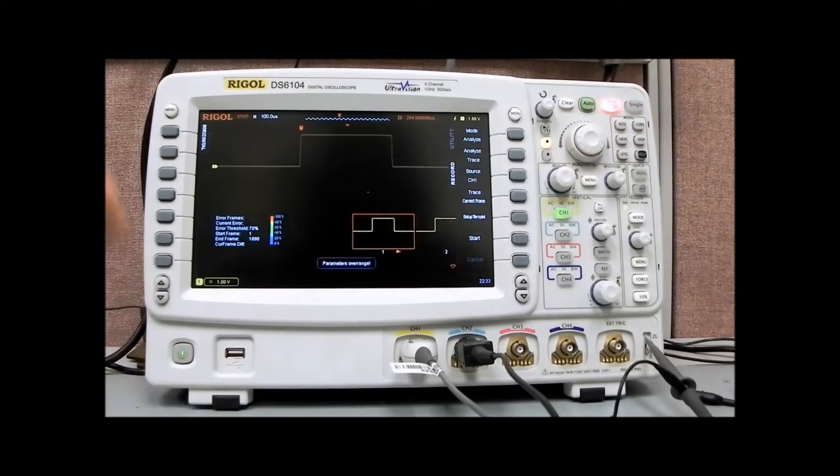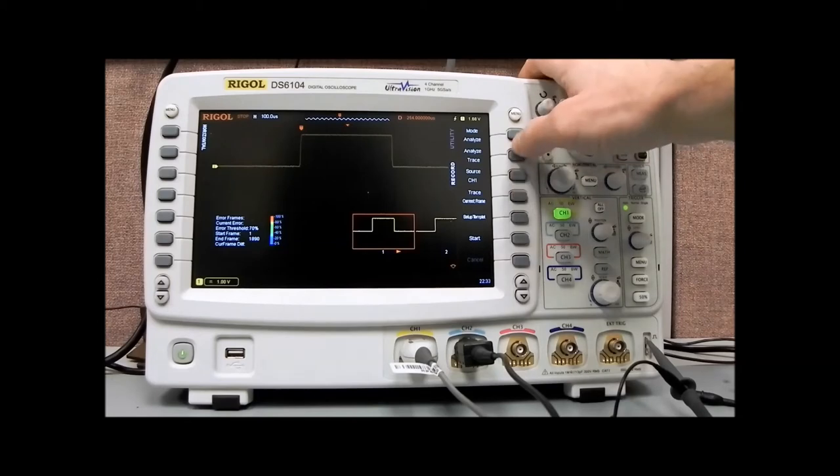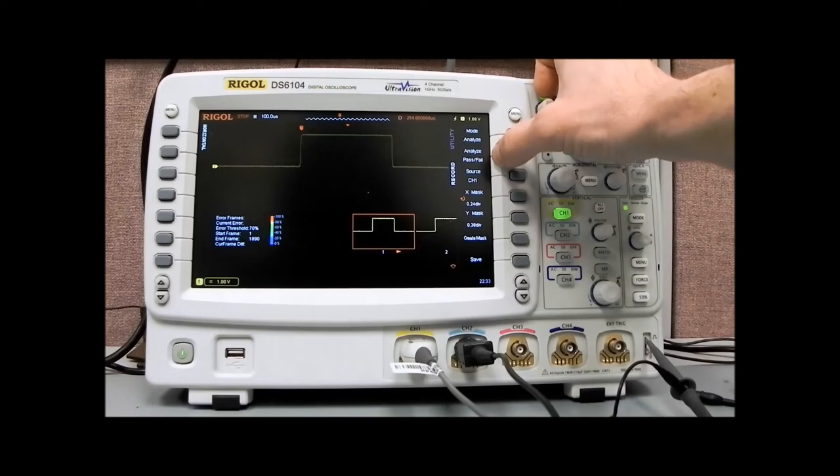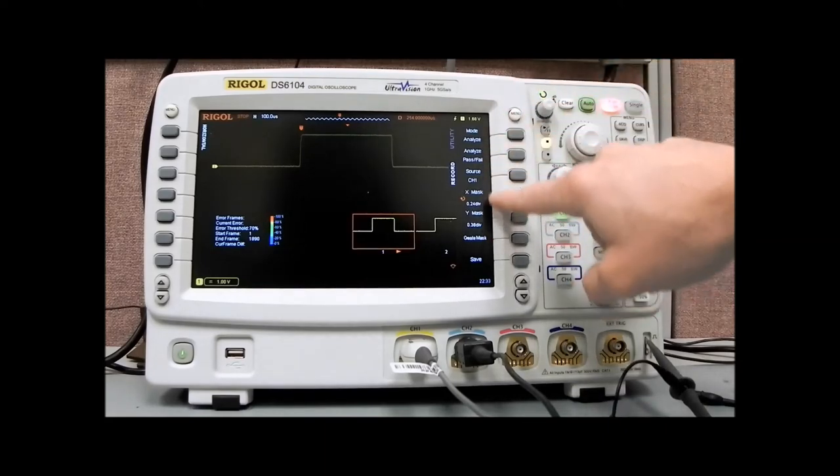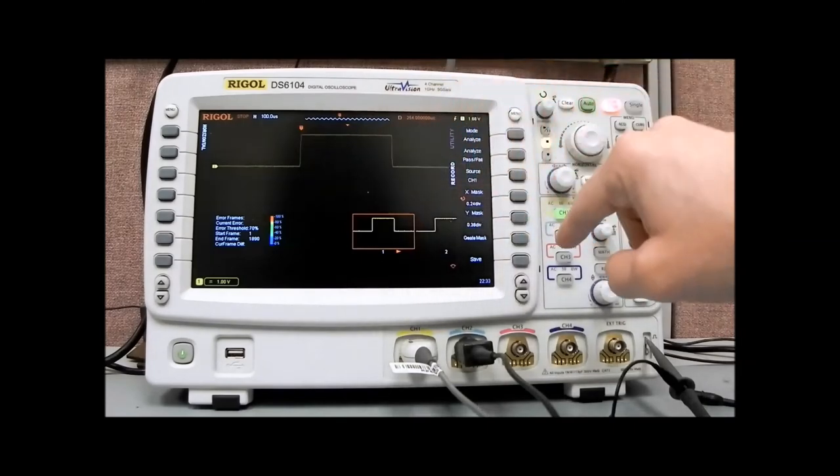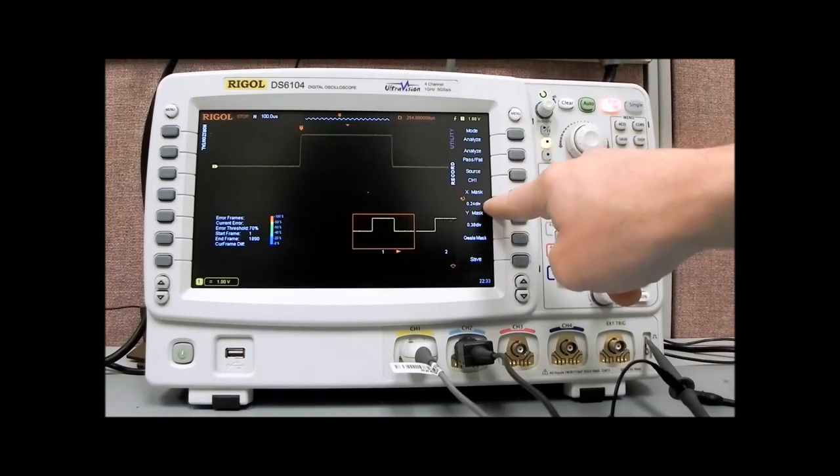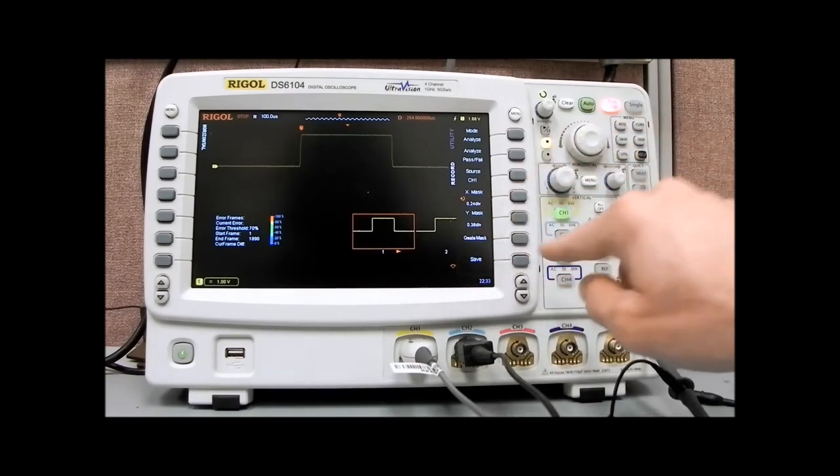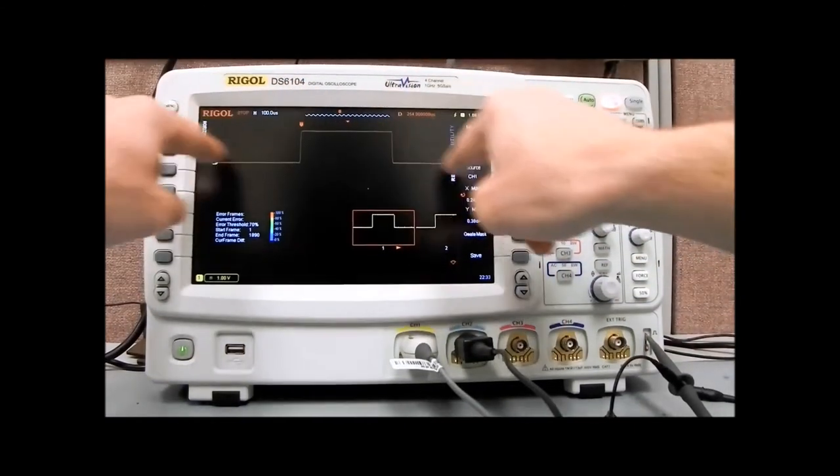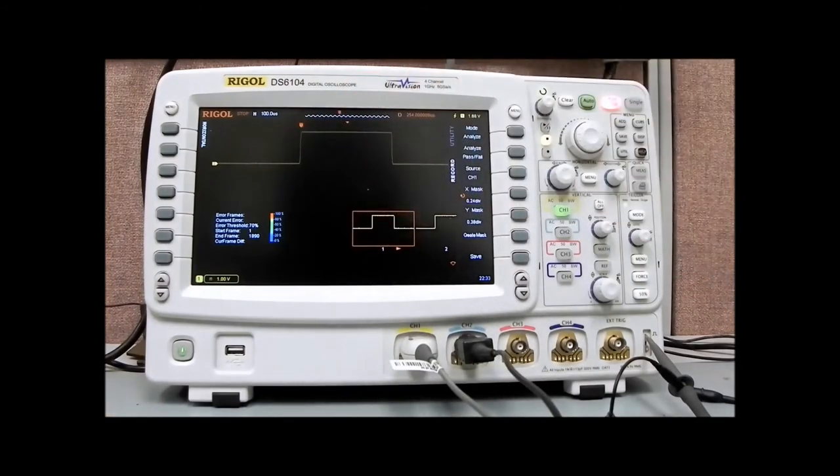The idea is, we can select a waveform that we consider an ideal or golden waveform, and then we can analyze. We can do a trace, or we can do pass-fail. I'd like to take a closer look at the pass-fail. Pass-fail records - we can set up a mask around that waveform that we have displayed, based on a percentage of the divisions. In this case, we have 24% of the division for X and 38% for Y. We hit Create Mask, and you'll see now we get this framework around that golden waveform.